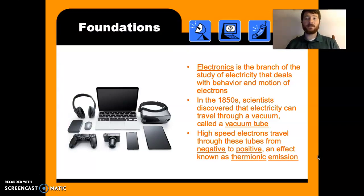Electronics is a branch of electricity that studies the motion and behavior of electrons. It started in the 1850s. Scientists discovered electricity could travel through a vacuum or a space that no matter was in.